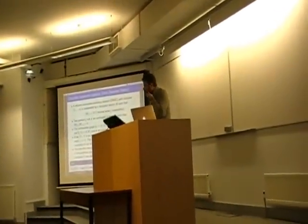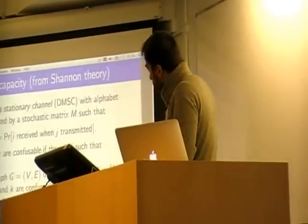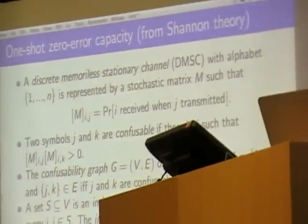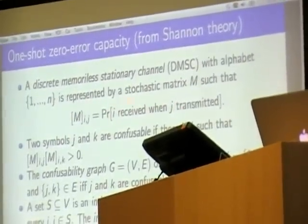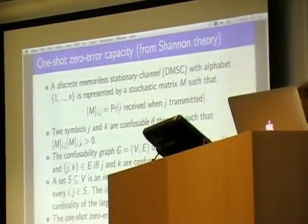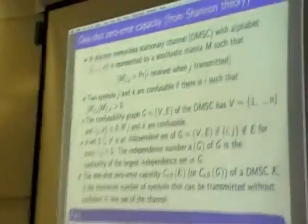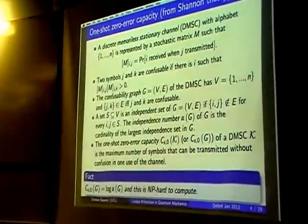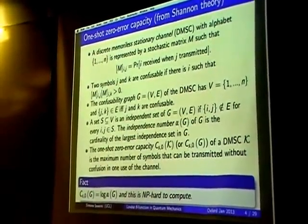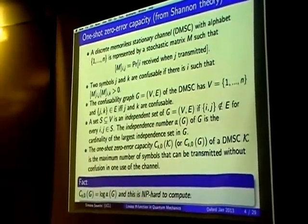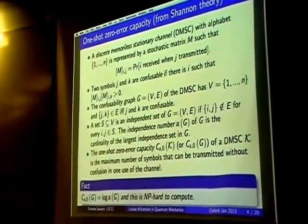Here is a bunch of definitions. I'll start by defining what the main idea in zero-error information theory is. We start with what a channel is — specifically, what a discrete memoryless classical channel is. This is just a stochastic matrix whose rows and columns are indexed by symbols of an alphabet. If the ij entry of this matrix is nonzero, then symbol i can be confused with symbol j. Two symbols j and k are confusable if there exist overlapping nonzero entries in their respective columns — meaning you send one symbol and can receive different symbols.